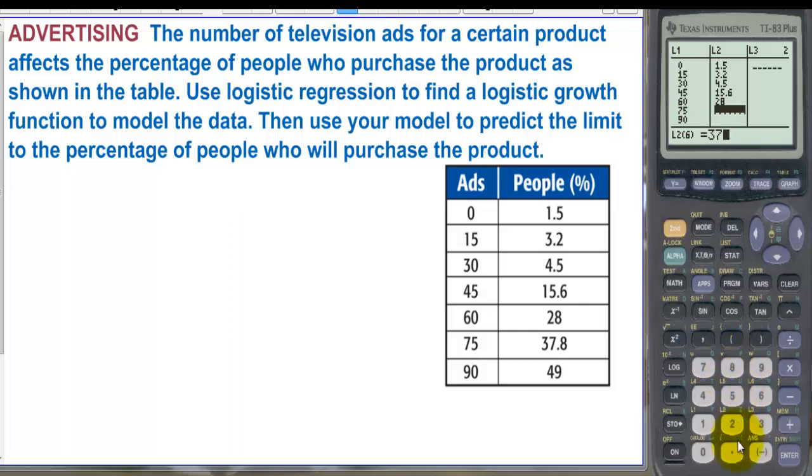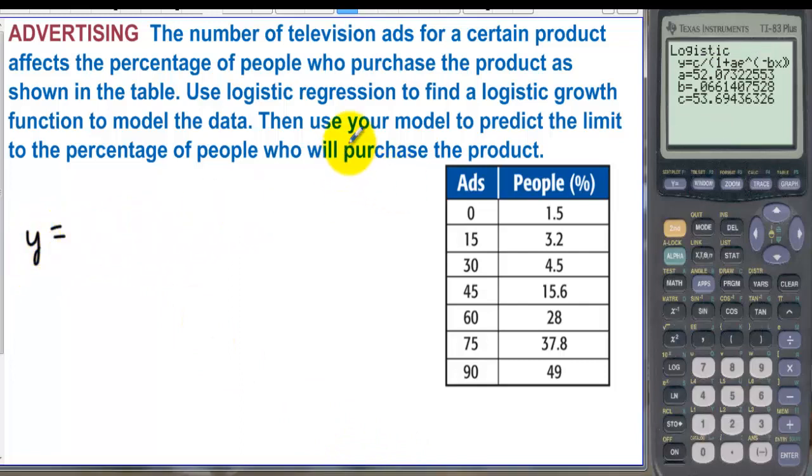And we're going to use the model so let's just go to regression we can go to stat calculate and we want logistic and we'll get the formula over here we have y equals well we're actually we're just predicting the limit to the percentage of people and c is the top percentage so there's your limit right there 53.694, 53.694 percent.